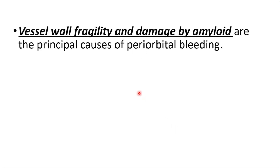Vessel wall fragility and damage by amyloids are the principal causes of periorbital bleeding in amyloidosis.